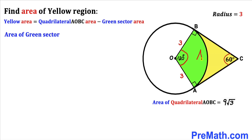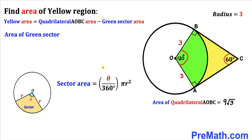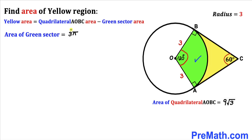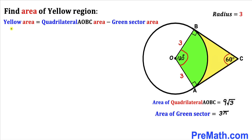Now let's calculate the area of the green sector. Recall the sector area formula: sector area = (θ/360°) × πr². In our case, θ = 120° and r = 3. So the sector area = (120/360) × π × 3² = (1/3) × 9π = 3π. Therefore, the area of the green sector is 3π.